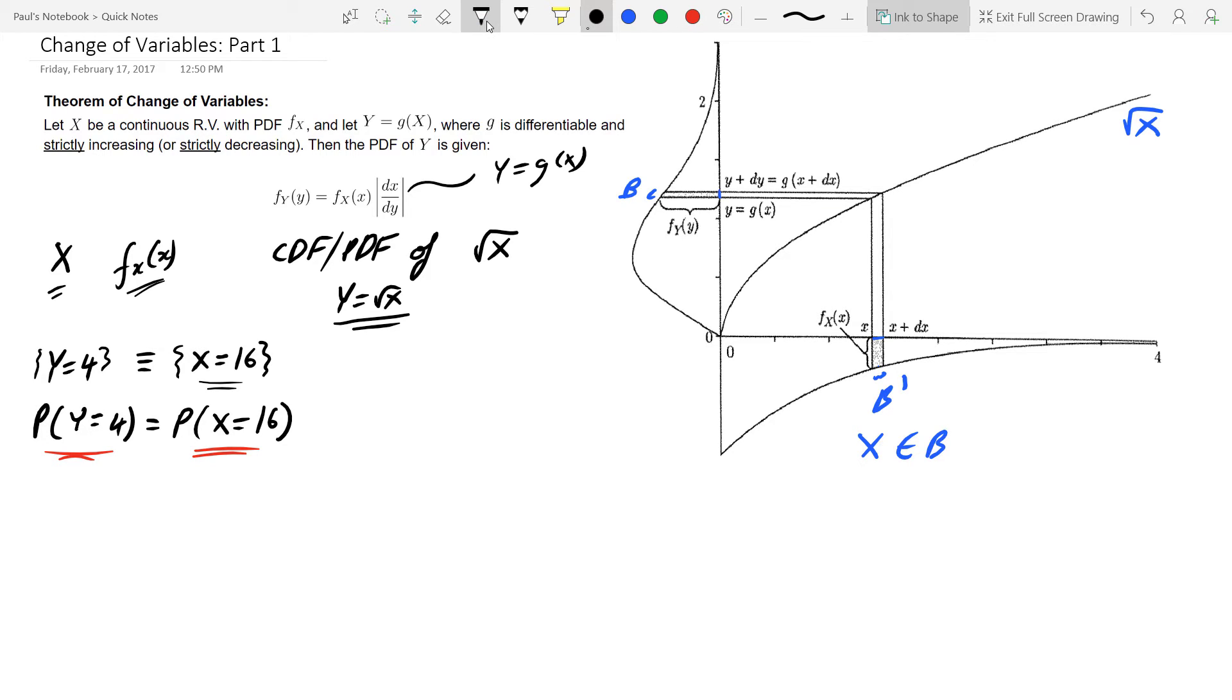In the continuous case scenario, instead of having equivalent events like Y being equal to 4 and such like that, we actually have a different notion and that notion is based around the idea of landing in an interval. So what is the probability, this is the thing we're interested in, of Y landing in B. So first off we'd like to think about what does it mean to have Y landing in the interval of B.